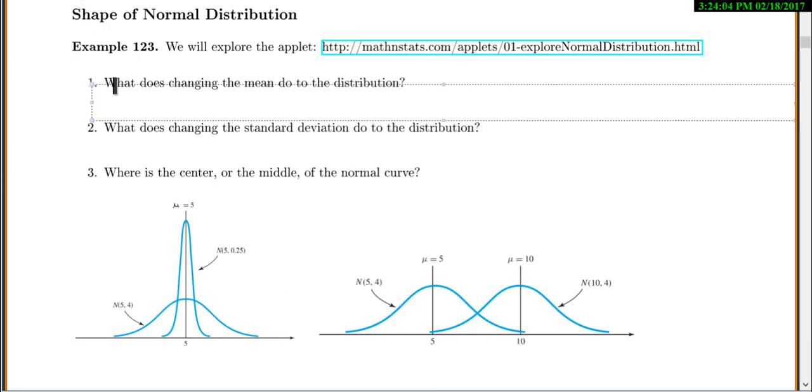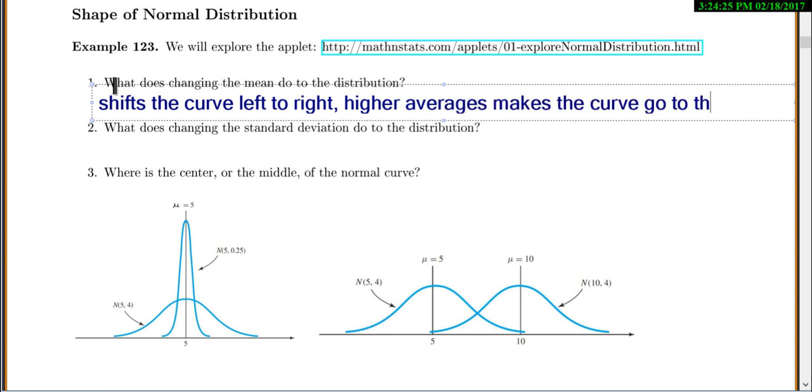So let's go back and make some notes. What does changing the mean do to the distribution? The average, or the mean, just kind of makes it go left to right. It shifts the curve left to right. It just basically tells you where to center it. So a higher average makes the curve go to the right.